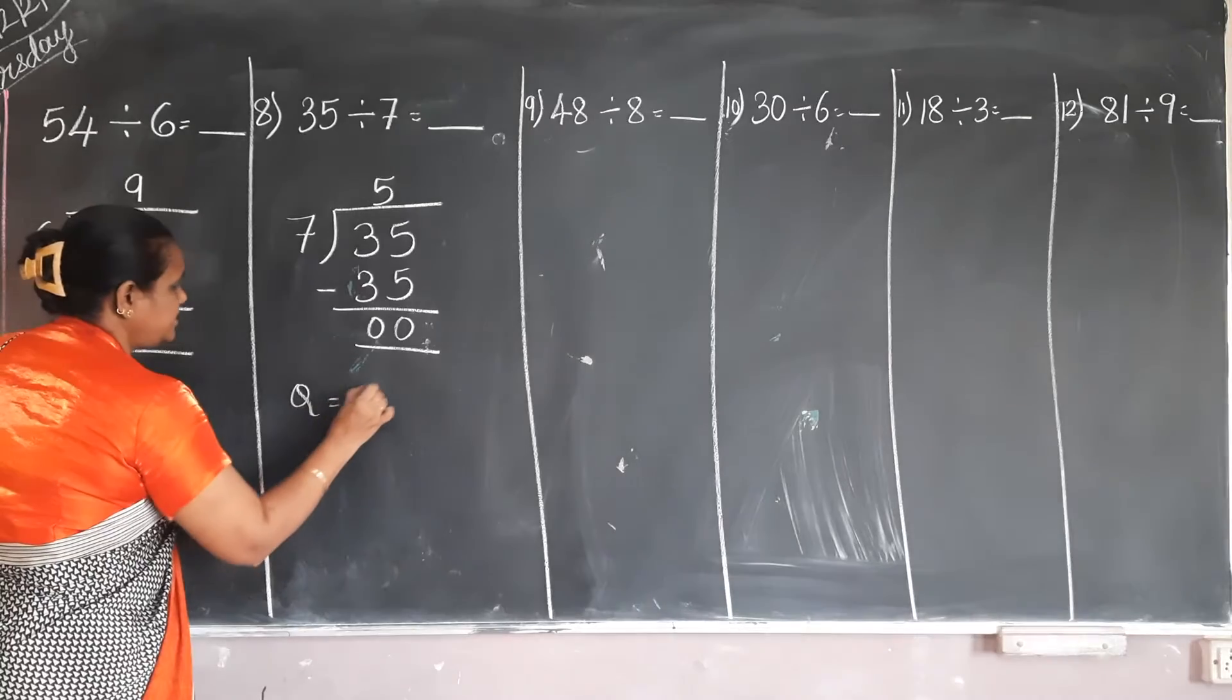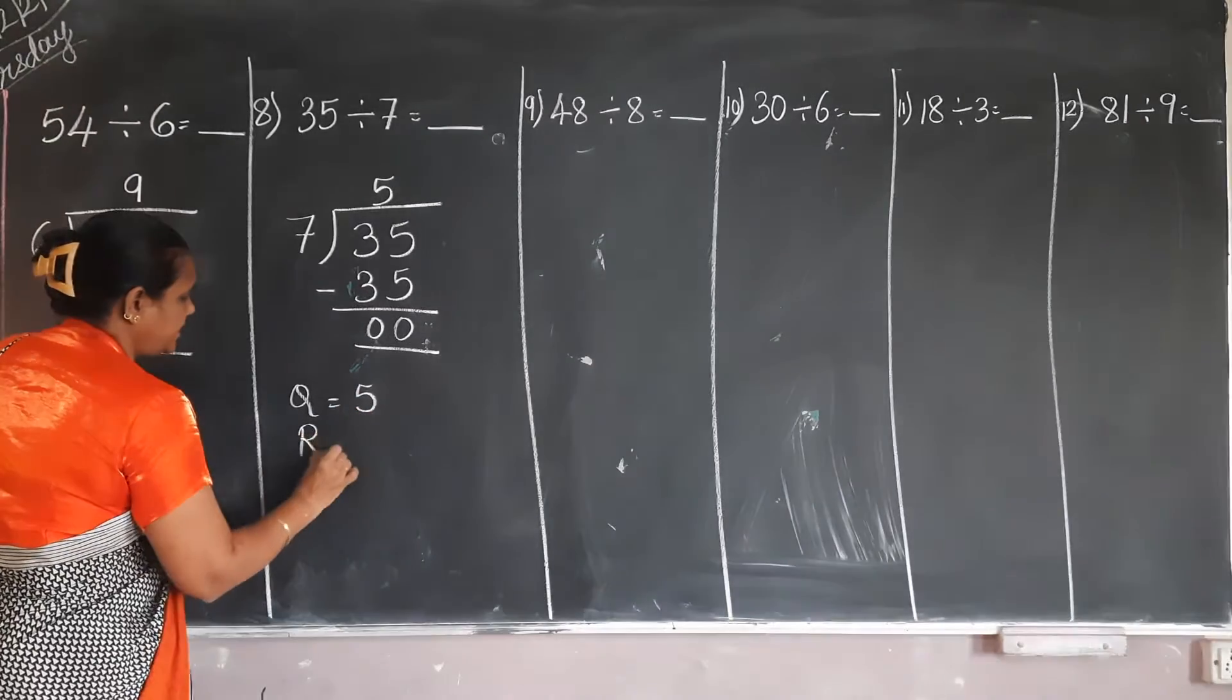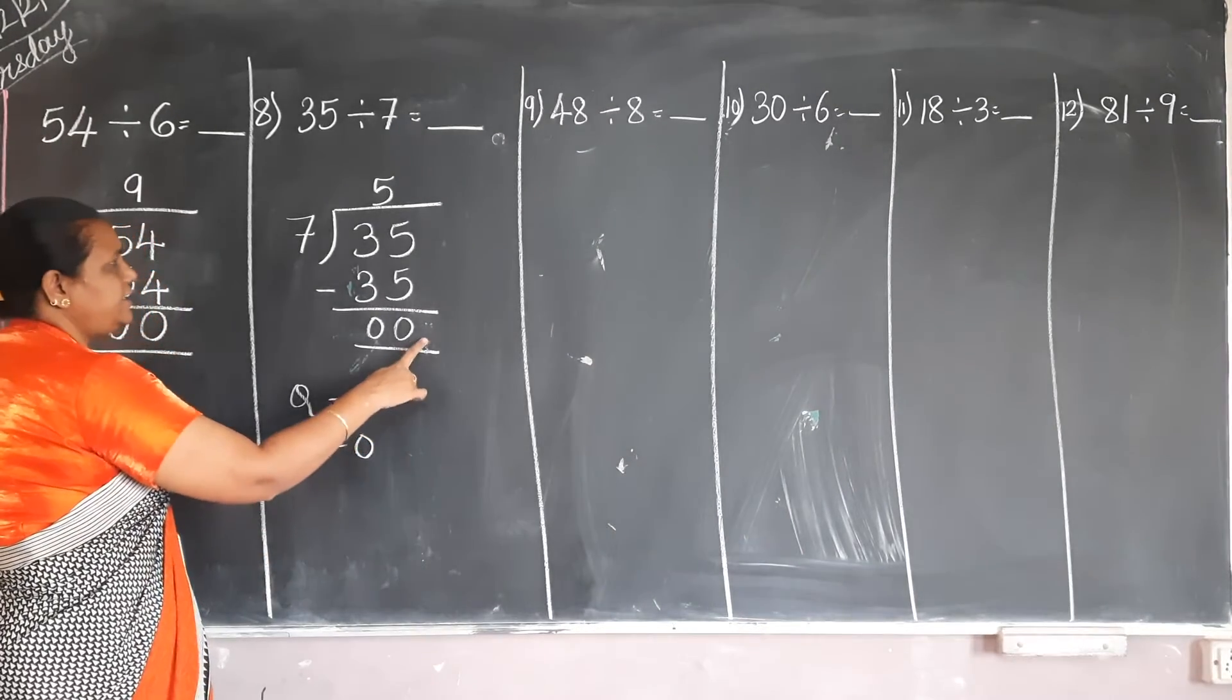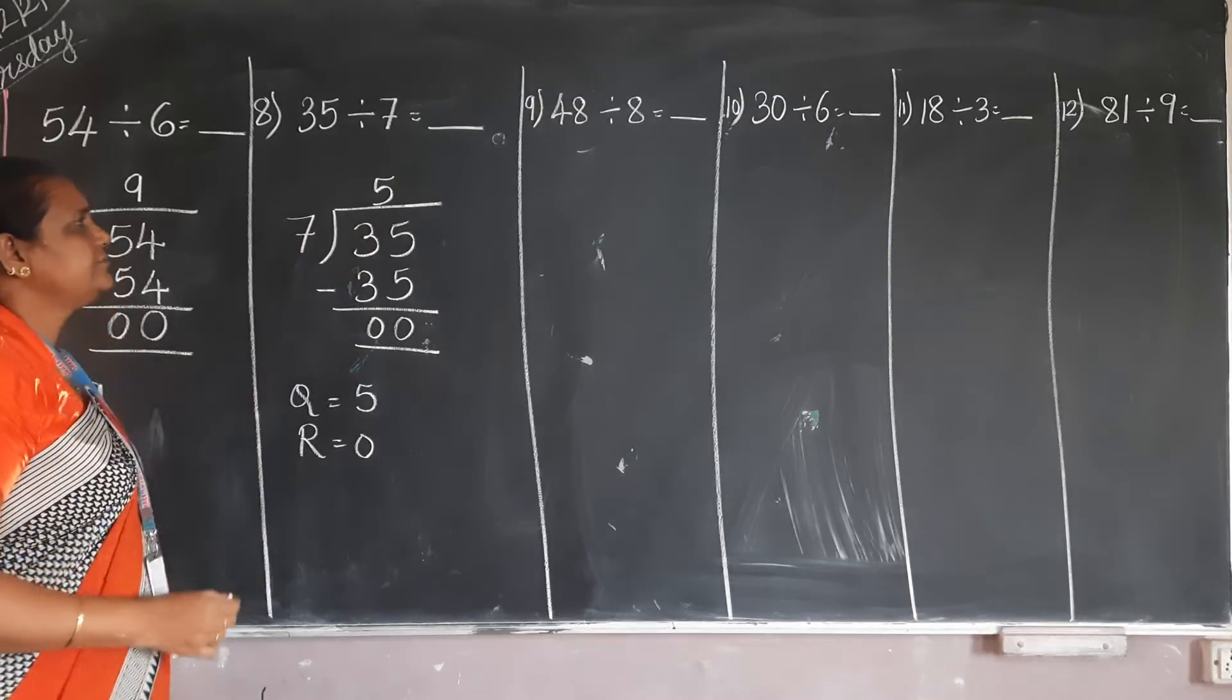35. So question is 5 and remainder is? This is the remainder and this is the question.